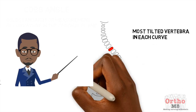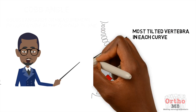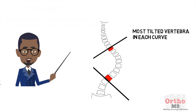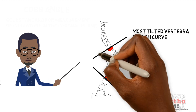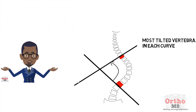Next, draw a line from the superior end plate of the most tilted vertebra of the superior curve, and a line from the inferior end plate of the most tilted vertebra of the inferior curve. The angle between the two is the Cobb Angle.